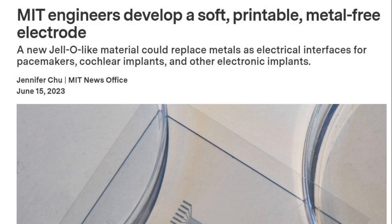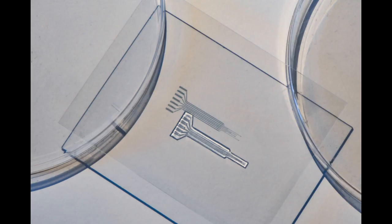Now, MIT engineers have developed a metal-free, gel-like material that is as soft and tough as biological tissue and can conduct electricity similarly to conventional metals. The material can be made into a printable ink, which the researchers patterned into flexible, rubbery electrodes.